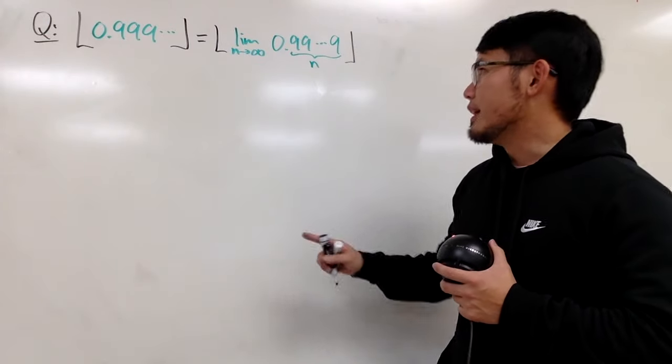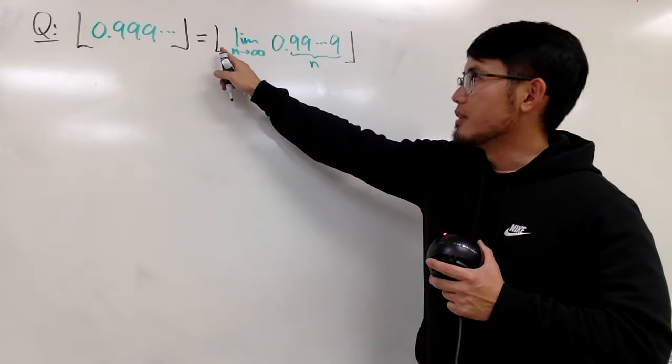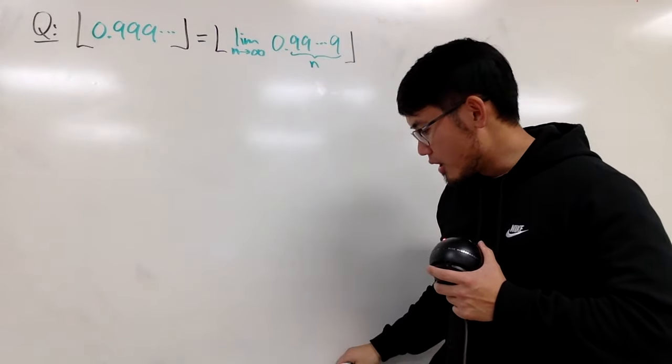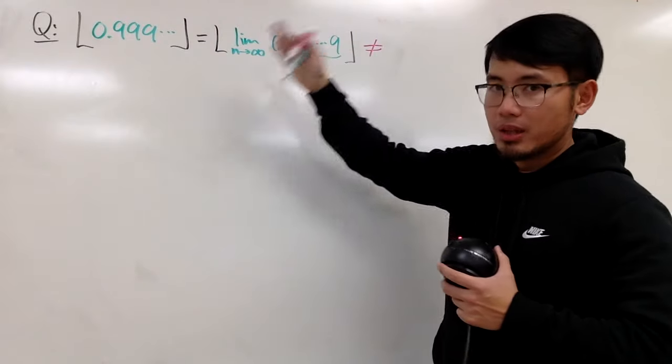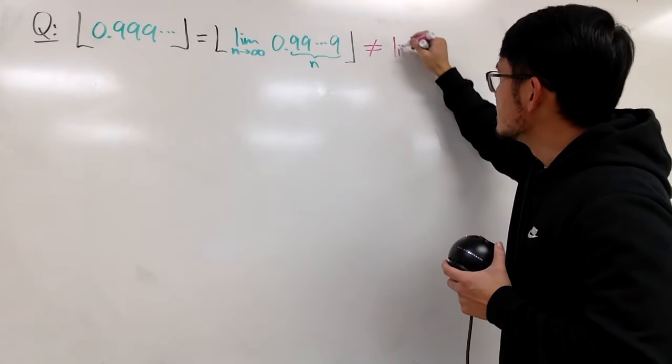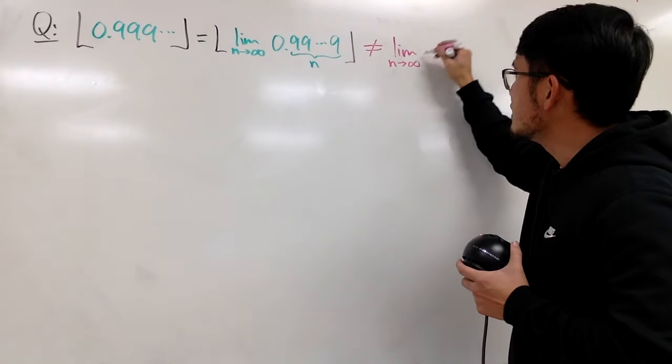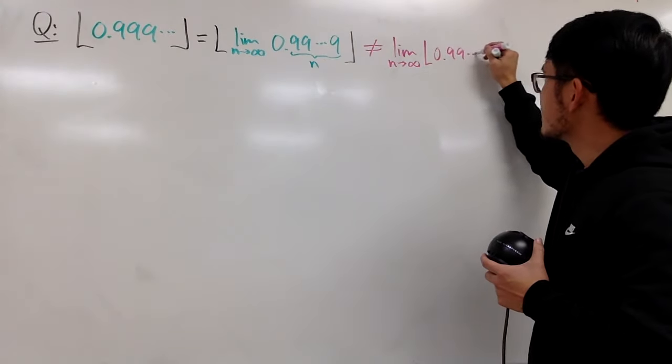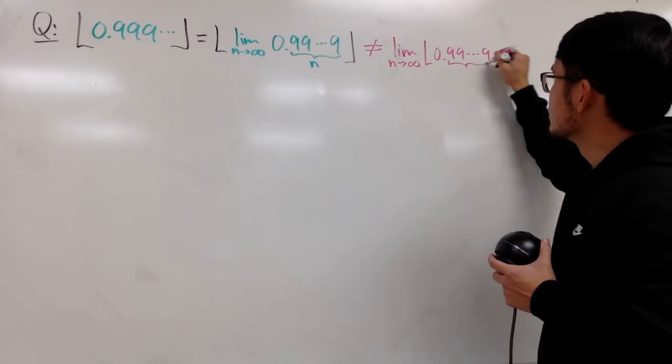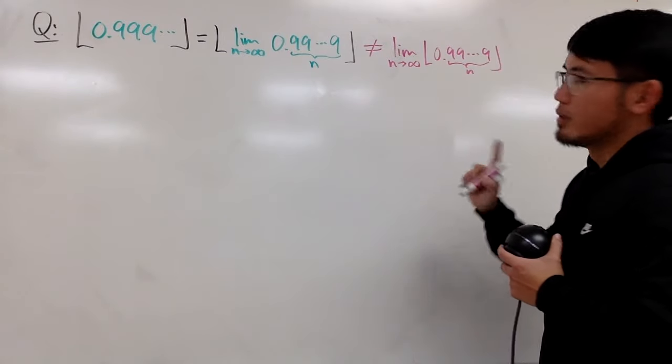So, as I was saying, we have a limit inside of the floor function. This right here is not the same as you put the limit on the other side. This is not the same as the limit as n goes to infinity of the floor of 0.99 dot dot dot 9. Even though you have n right here. No.